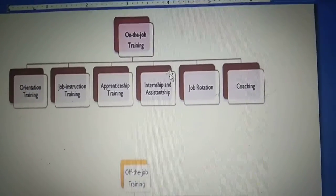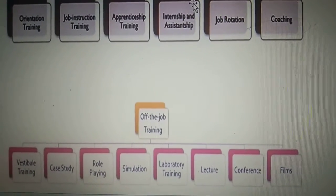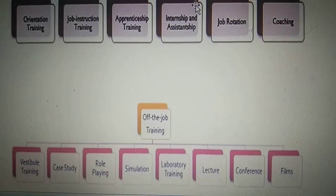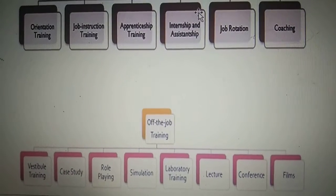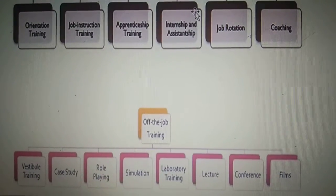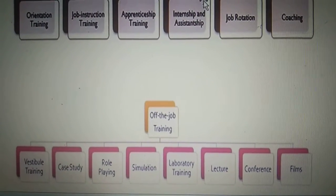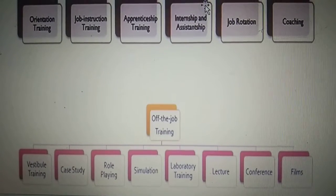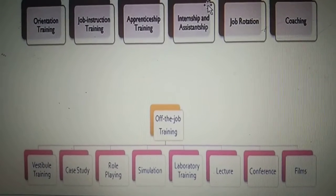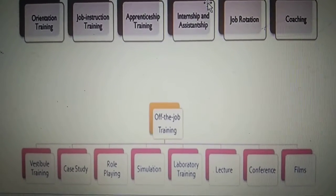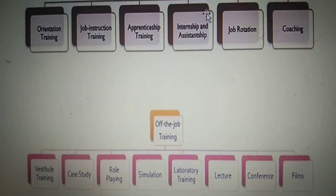These are the on-the-job training methods provided while the employee is working inside the organization. The next type is off-the-job training method, which means providing training to the employee by taking them outside the organization, or training an individual who will then be appointed for a particular job. The different off-the-job training methods include: vestibule training, case study, role playing, simulations, laboratory training, lecture, conference, and films. We will be covering only six of these methods.